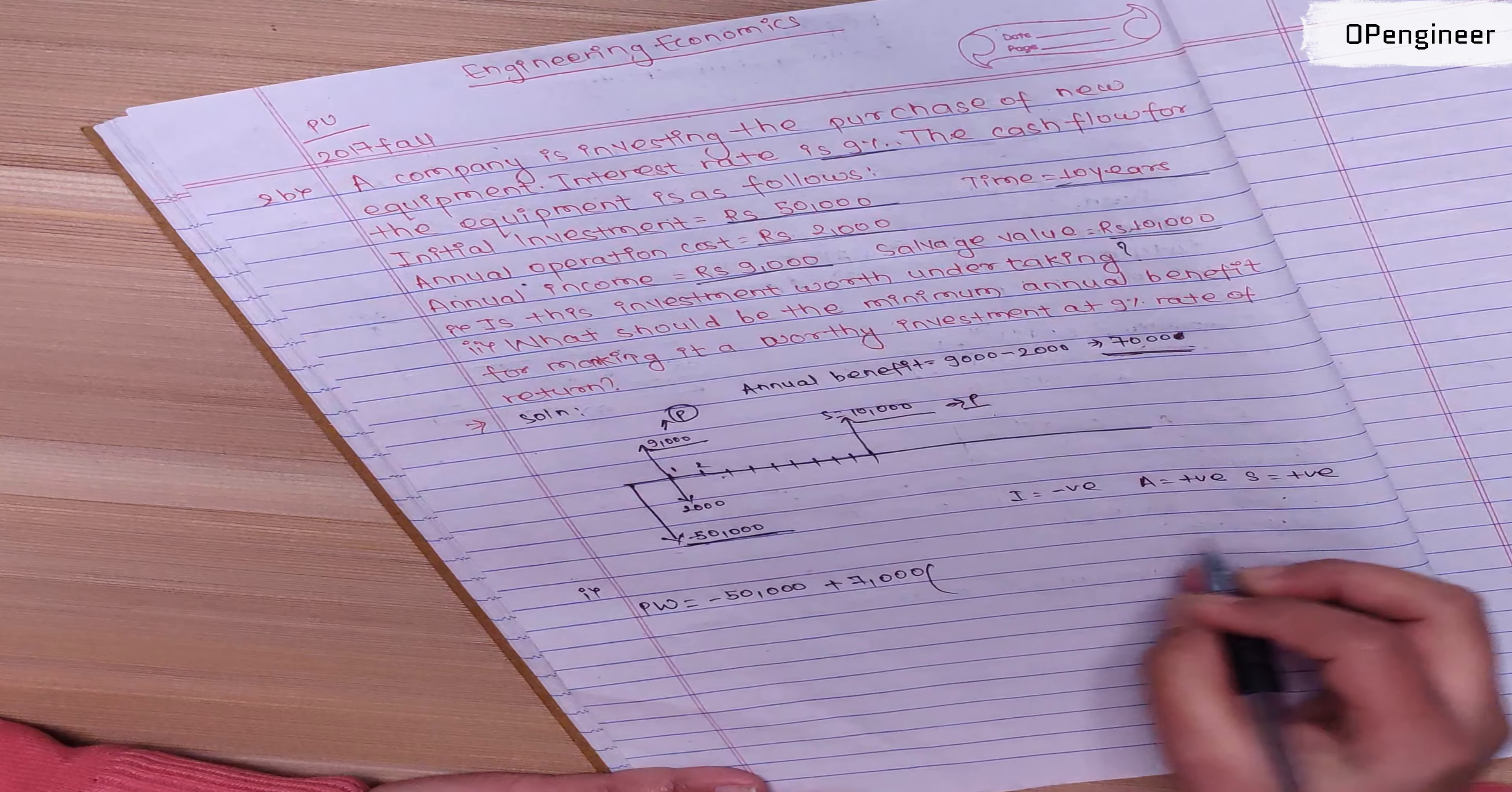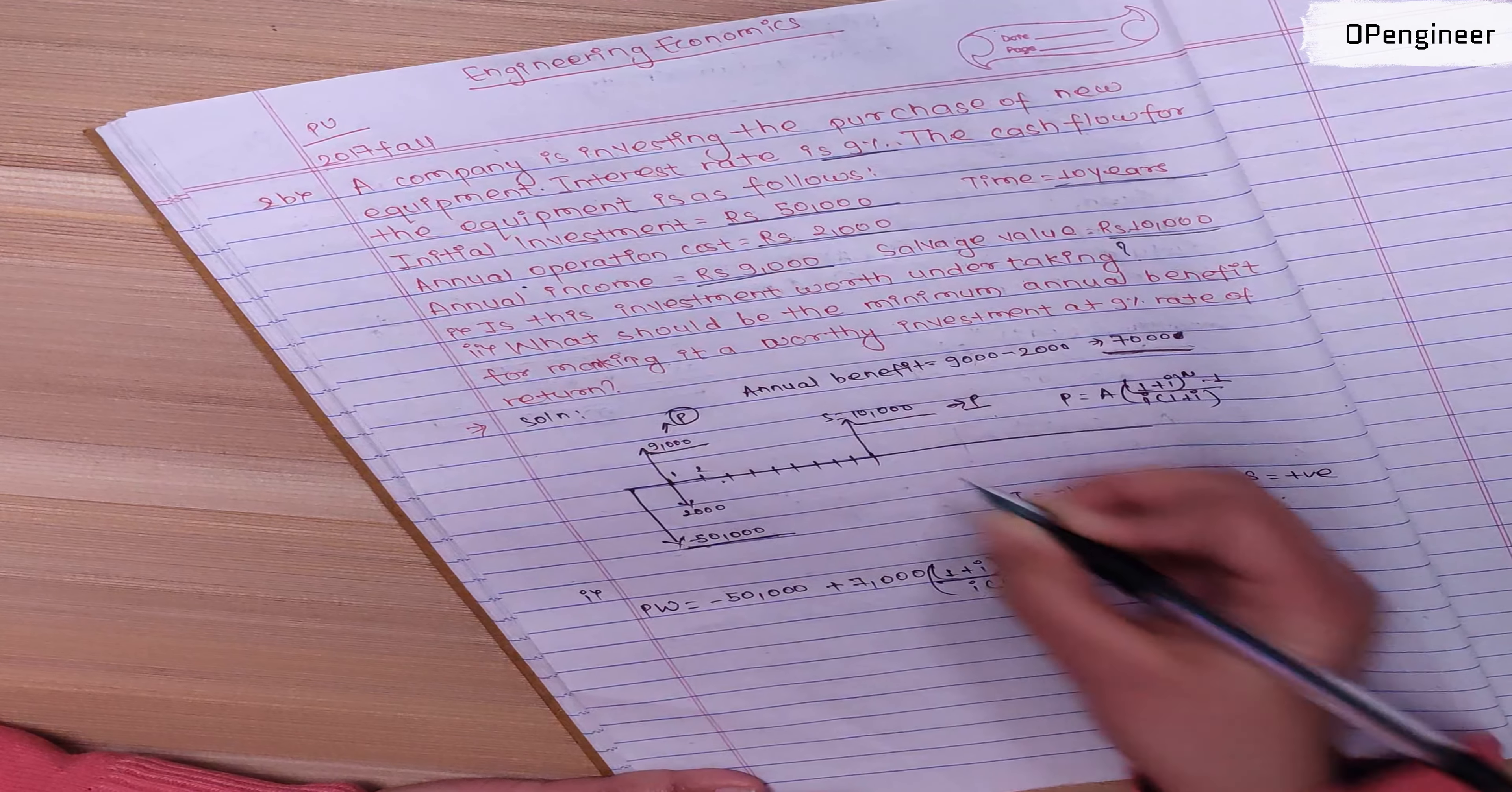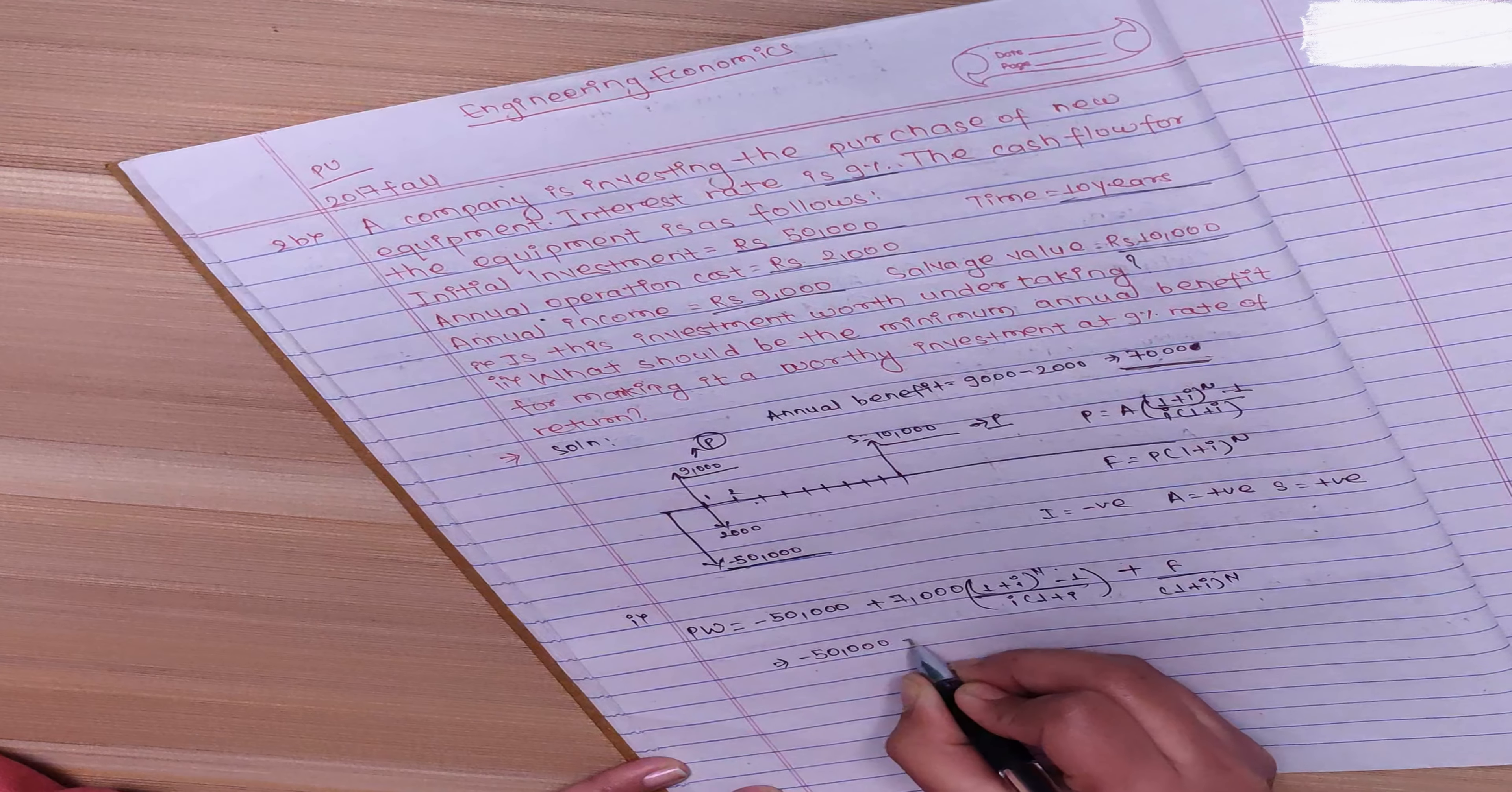The present worth formula is: Present equals A times (1 plus i) to power n minus 1, divided by i times (1 plus i) to power n. Future equals Present times (1 plus i) to power n.